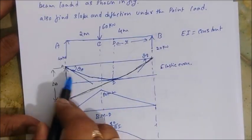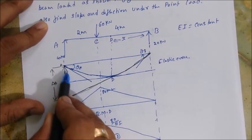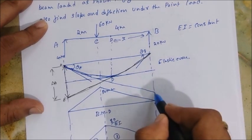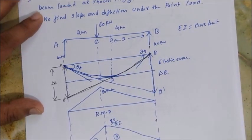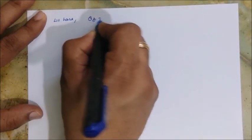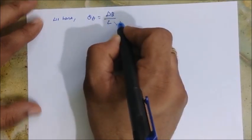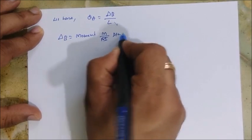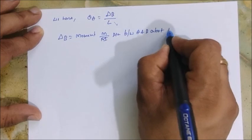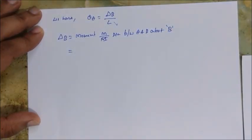Now calculate θ_A using the same concept. Draw the tangent from A and extend it to B. Call the intercept δ_B, then θ_A = δ_B / L. δ_B equals the moment of the M/EI diagram between A and B about B. Solve for both regions, taking the distances from B for each region.